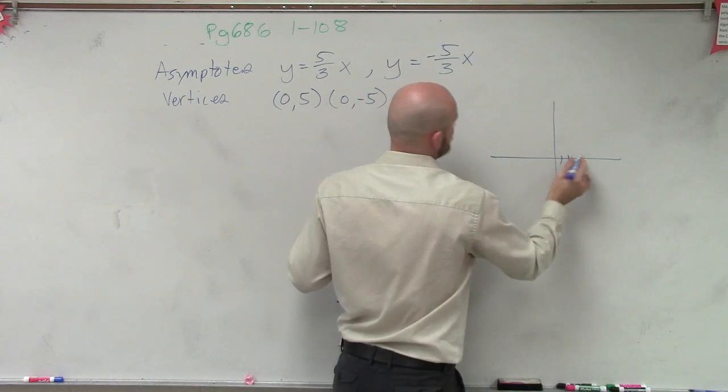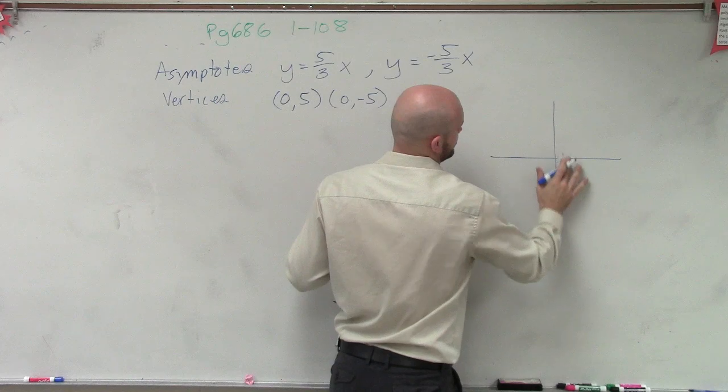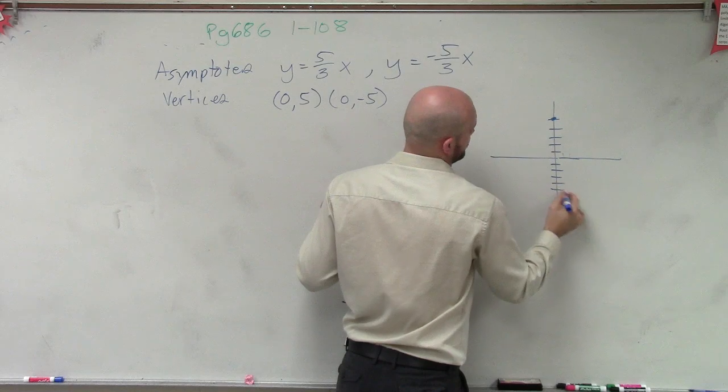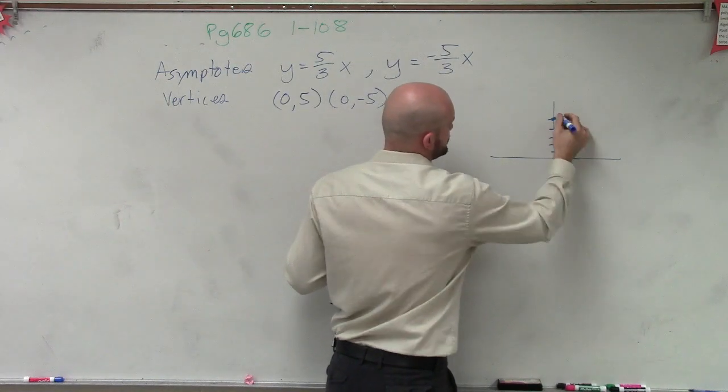0, 5 is 1, 2, 3, 4, 5, and 1, 2, 3, 4, 5. Now, those are your two vertices.